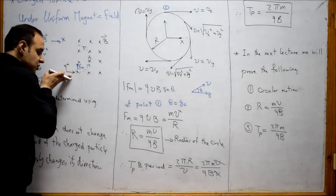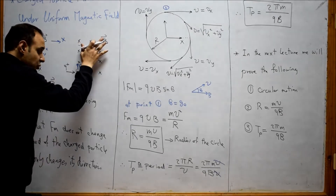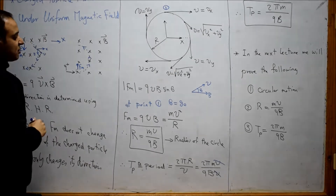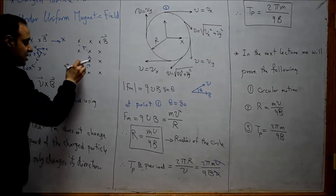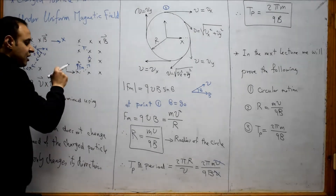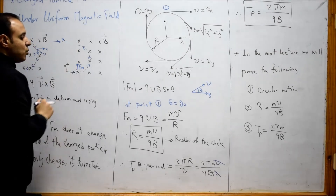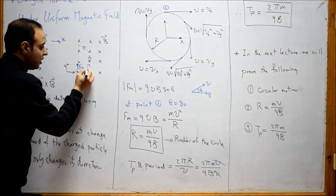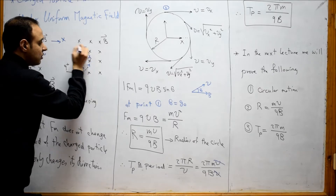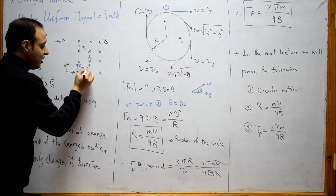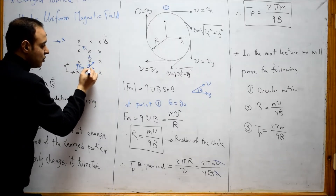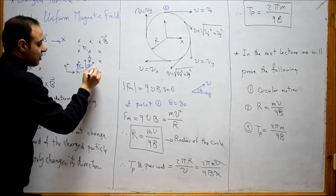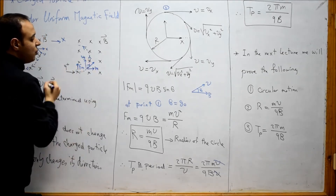This proton, without the magnetic field, wants to continue moving in a straight line in the x direction. This force wants to take the proton toward the positive y direction. Instead, it will move in between, and at any point the velocity has two components: vx and vy.